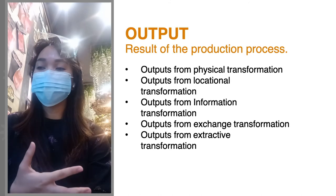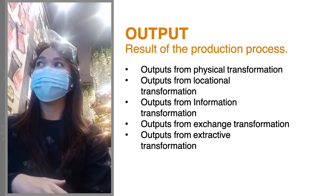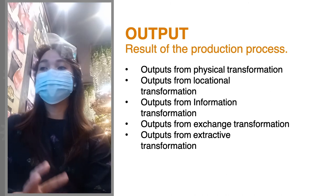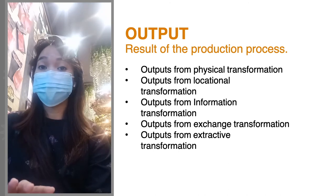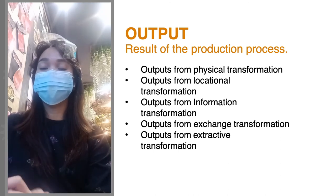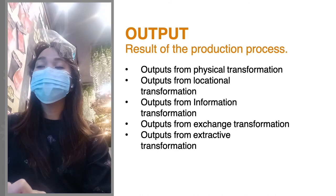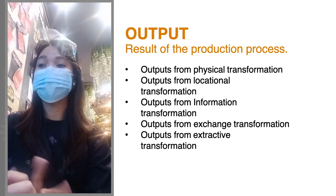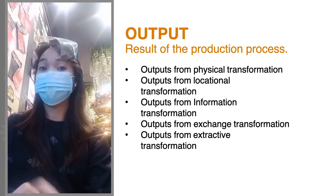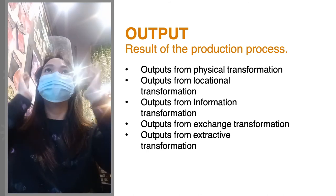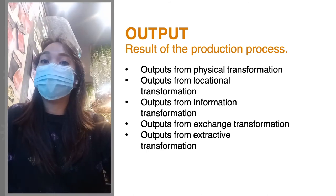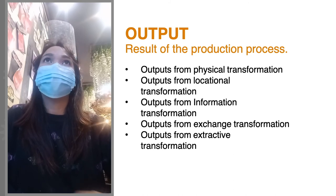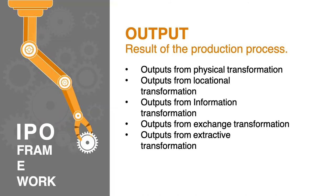The last part of the IPO framework is the output — the result of the production process. The output may be the result of physical transformation, locational, informational, exchange, or extractive transformation, depending on what kind of transformation was applied to the input.